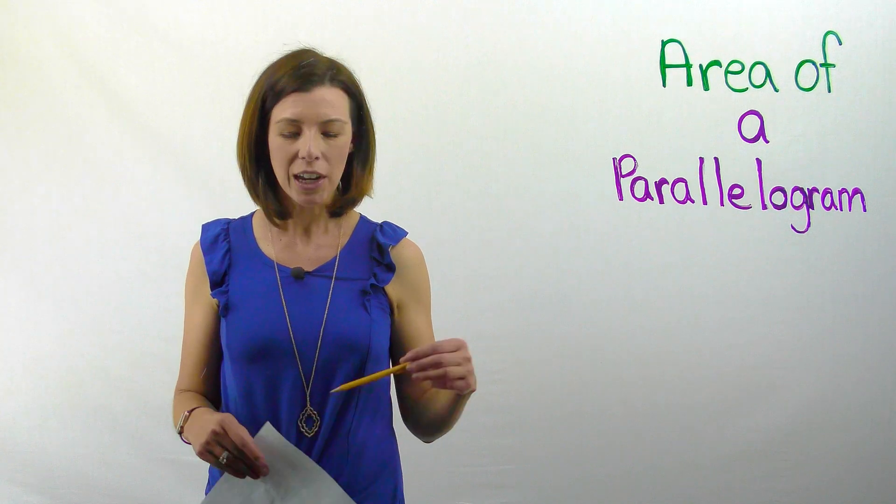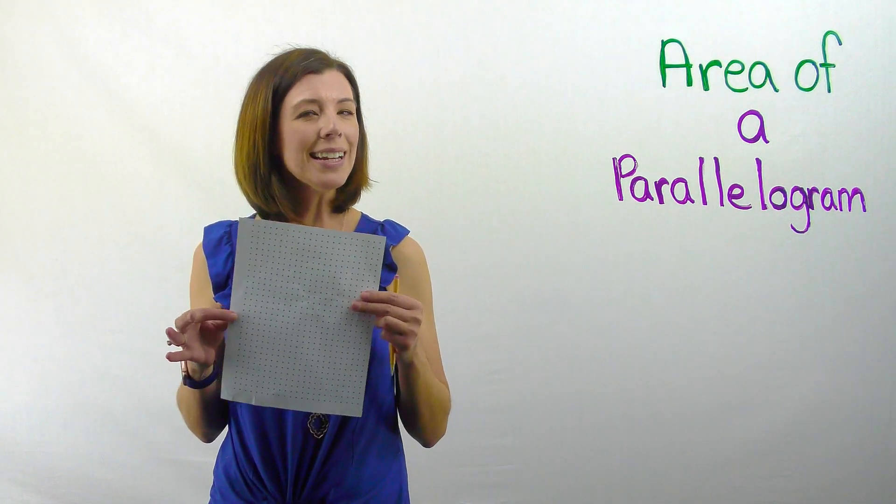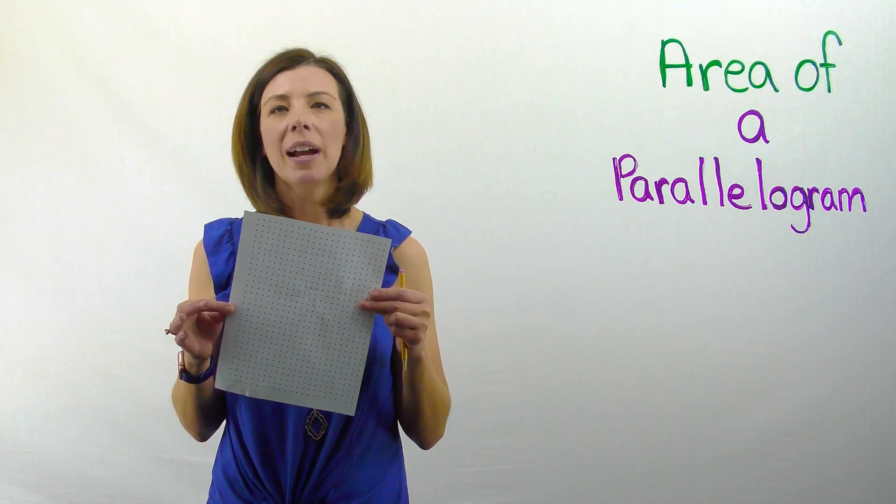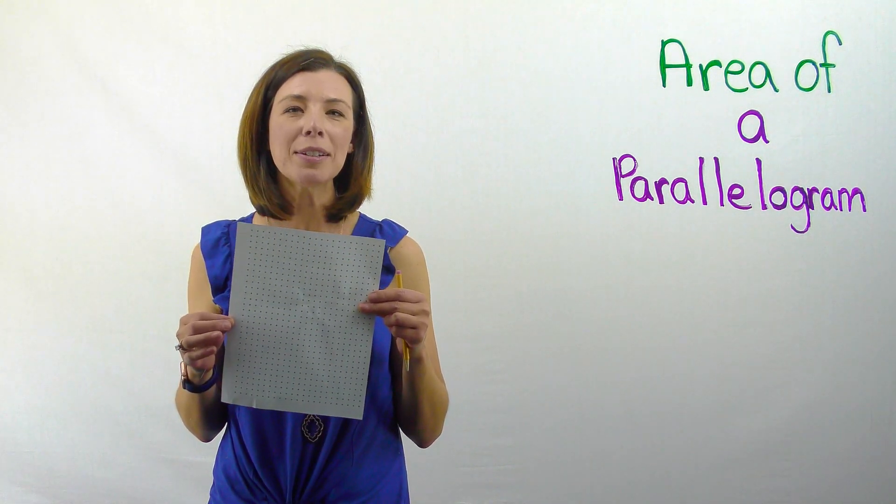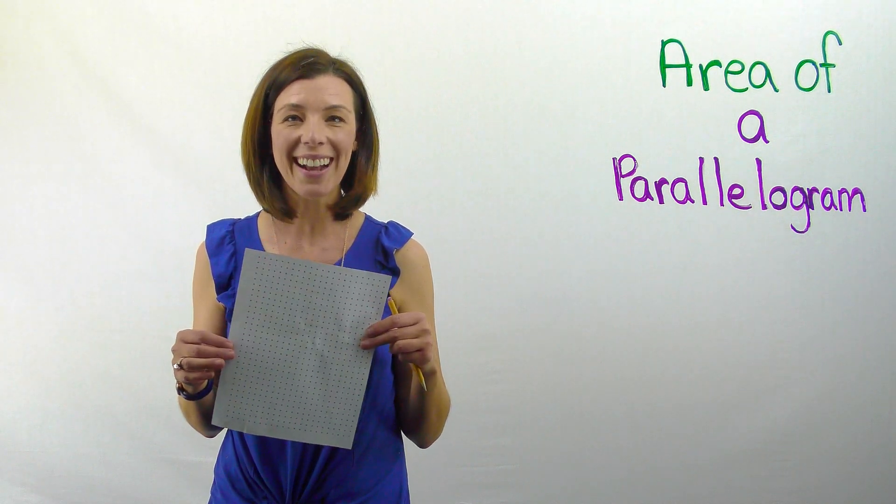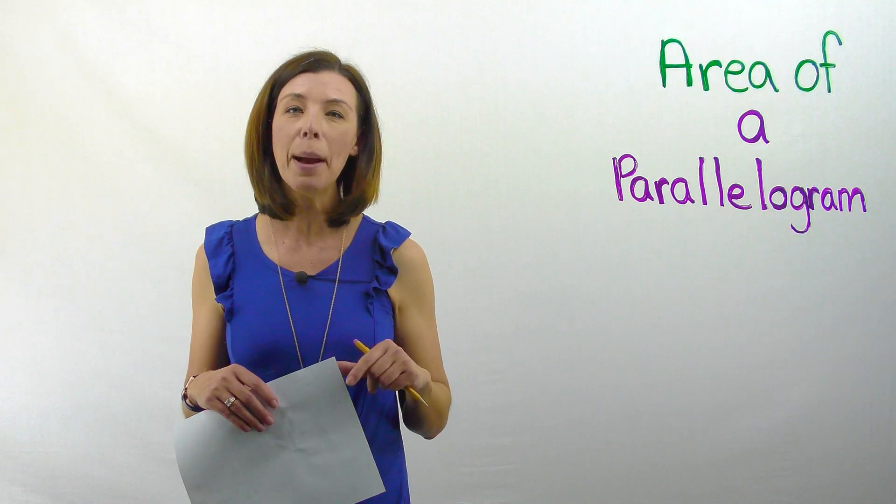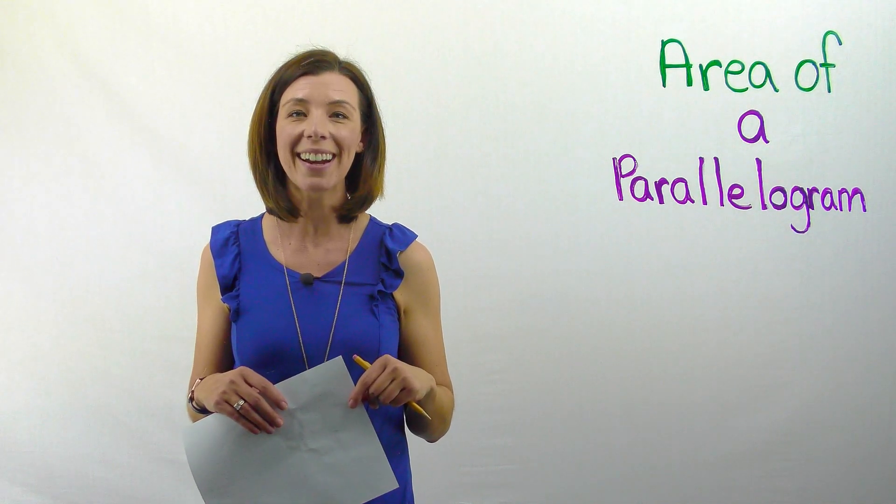For this activity, you're going to need a couple of things. You're going to need something to write with, I have a trusty pencil, and some pegboard paper. The reason you're going to do pegboard paper is because we're going to be able to draw a parallelogram and cut it out. So, that's the first thing I want you to do, is to draw a parallelogram and cut it out.